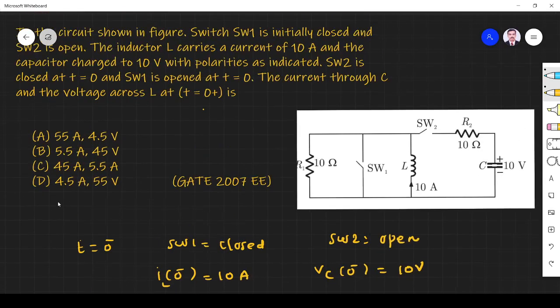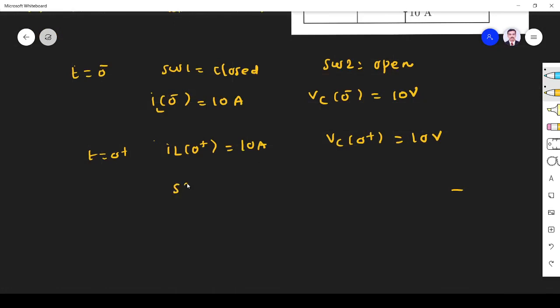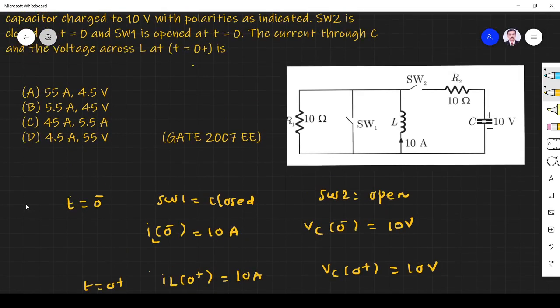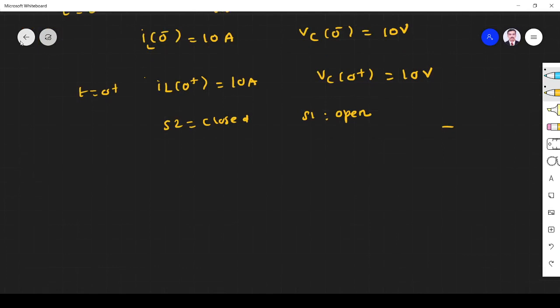At T equals 0 plus, what is happening? At T equals 0 itself, switch S2 is closed and switch S1 is open. So when S2 is closed and S1 is open, the diagram will be: this will be there, this one is open. So S1 is open.